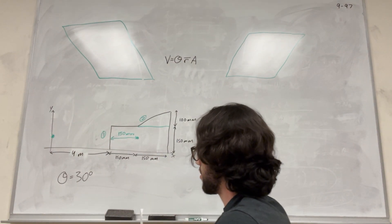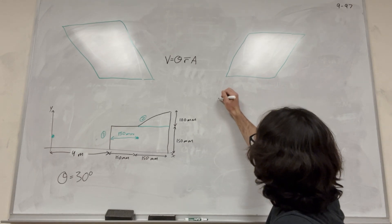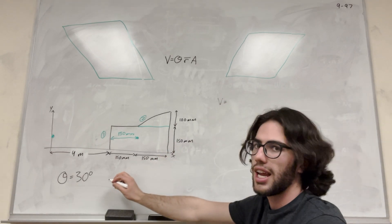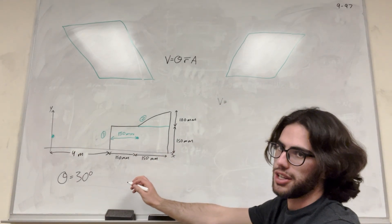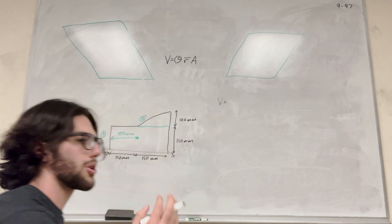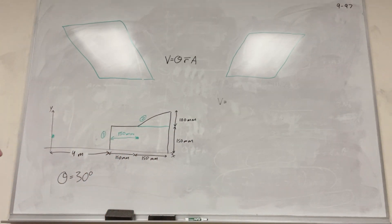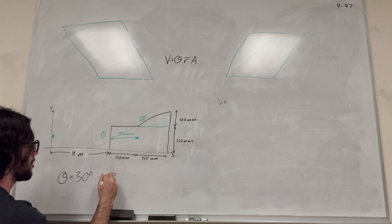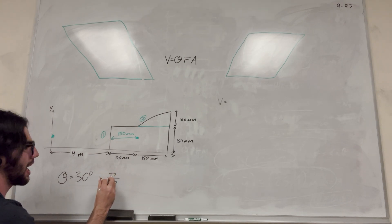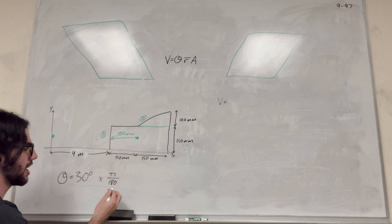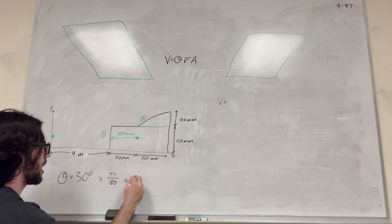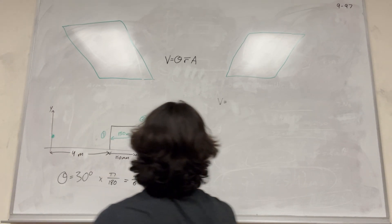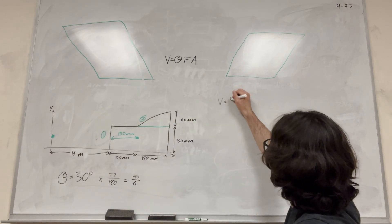We can start setting up the equation. Volume is going to be equal to theta times radius times area. Theta is 30 degrees, but we're going to convert to radians — multiply by pi over 180 because 1 pi radians equals 180 degrees — and we get pi over 6 radians. So theta equals pi over 6.